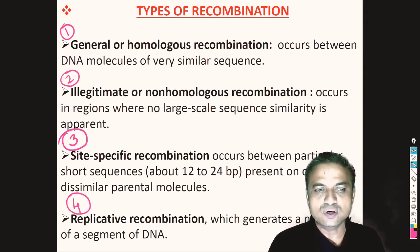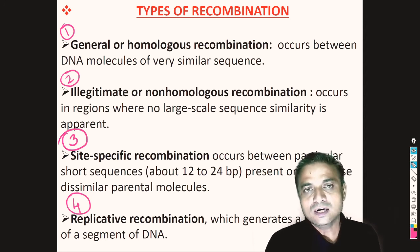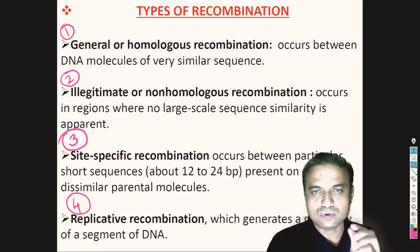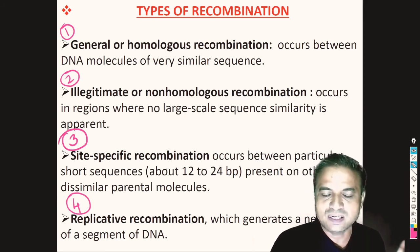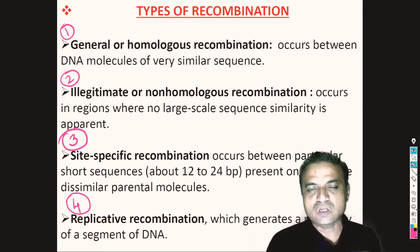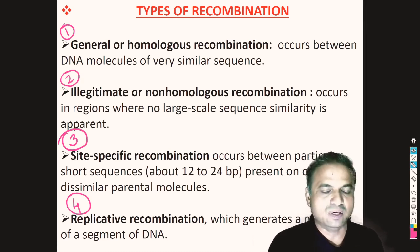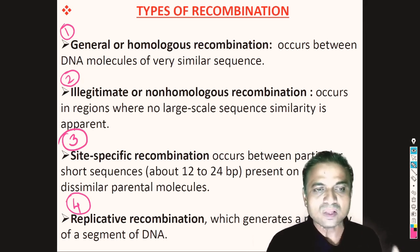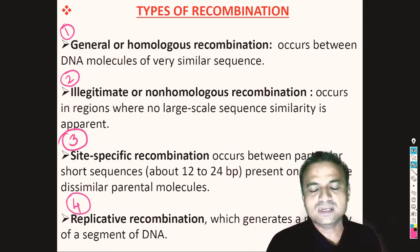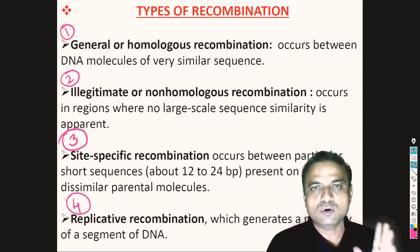The next example is site-specific recombination, which occurs between two short sequences on two different DNA molecules. Only the contact point of the DNA — which ranges from 12 to 24 base pairs, and in E. coli it is 7 base pairs — needs to show site specificity. The rest of the DNA may not be homologous.